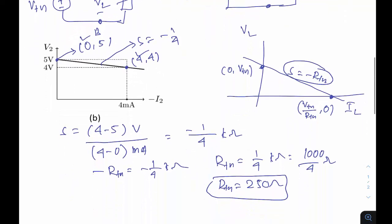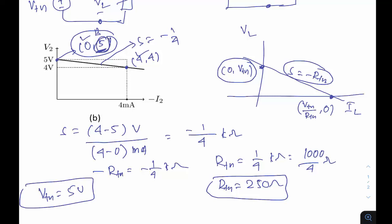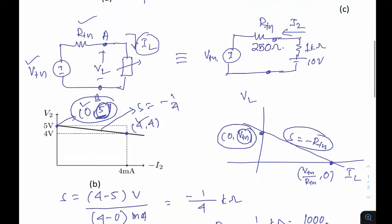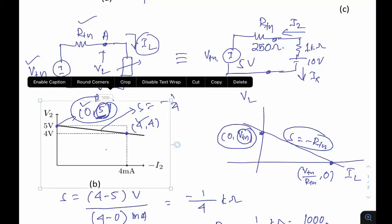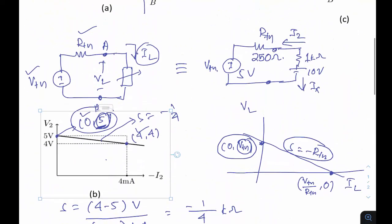From the y-intercept coordinate (0, 5): comparing with (0, Vth), we get Vth equals 5 volts directly. Now with Vth = 5 V and Rth = 250 Ω known, we can find I2. Let current IX equal minus I2, so I2 equals minus IX. Writing the circuit equation: I2 = (10 minus 5) divided by (250 plus 1000).